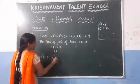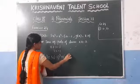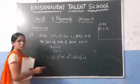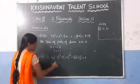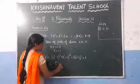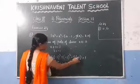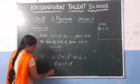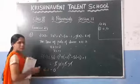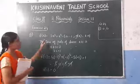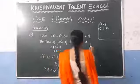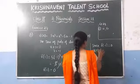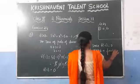Substituting x equals minus 1: 5 times minus 1 whole cube, plus minus 1 whole square, minus 5 times minus 1, minus 1. This gives: minus 5, plus 1, plus 5, minus 1. We get plus 5 minus 5, and plus 1 minus 1 — both pairs cancel, giving 0. Since f of minus 1 equals 0, we can say that g of x is a factor of f of x.